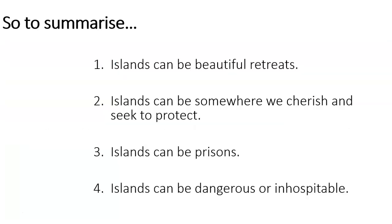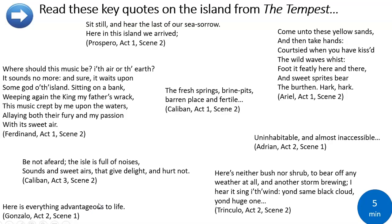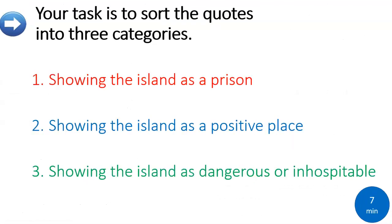Your next task is to read these key quotes about islands from the Tempest. In these quotes the island is being represented and seen in lots of different ways. Take five minutes to read through those. Now you've read them, I want you to start thinking about the different ways in which the island is represented. I want you to categorise them — one group showing the island as a prison, one showing it as a positive place, and one showing it as a dangerous or inhospitable place.